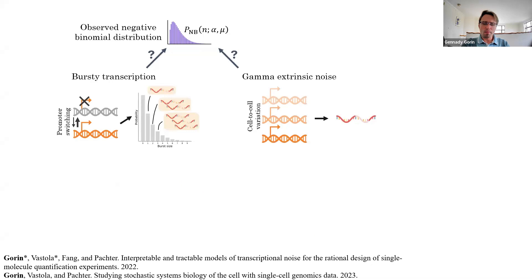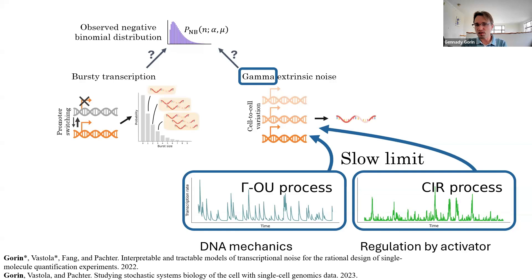But we can actually revisit the figure I showed a few slides back and delve deeper into these assumptions, because distributions could be negative binomial for other reasons than bursting. For example, the rate of transcription might exhibit some variability between cells, and if this variability is gamma distributed, we'll get the exact same negative binomial distribution. And then we can use the same thought process to ask, well, this is a pretty canonical model, but why should this variation be gamma? What is, like, how should we explain this? And by using the same thought process, we found it's the slow limit of several possible biological models.